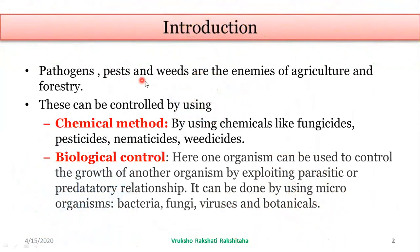Pathogens, pests and weeds are the enemies of agriculture and forestry. This can be controlled by various methods. I will mention only two methods here. The chemical method uses chemicals like fungicides, pesticides, nematicides and vericides. In biological control, one organism can be used to control the growth of another organism by exploiting parasitic or predatory relationships.